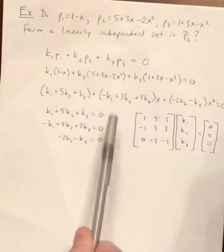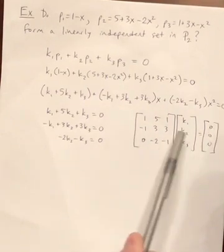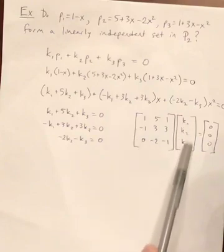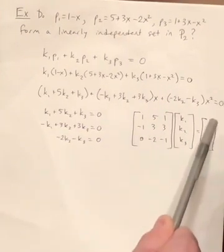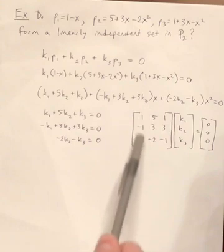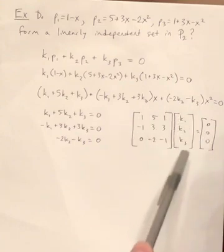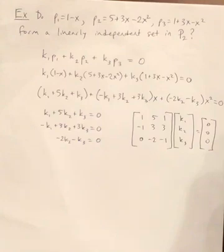Now notice if this were invertible, I would multiply by the inverse on the left on both of these. And what I would get on the left-hand side is just this column vector. But what I would get over here is that inverse times 0, 0, 0. Of course, that's going to give me 0. So in other words, if this is invertible, then the only solution is that the K's would be zeros. So let's check and see if that's invertible.